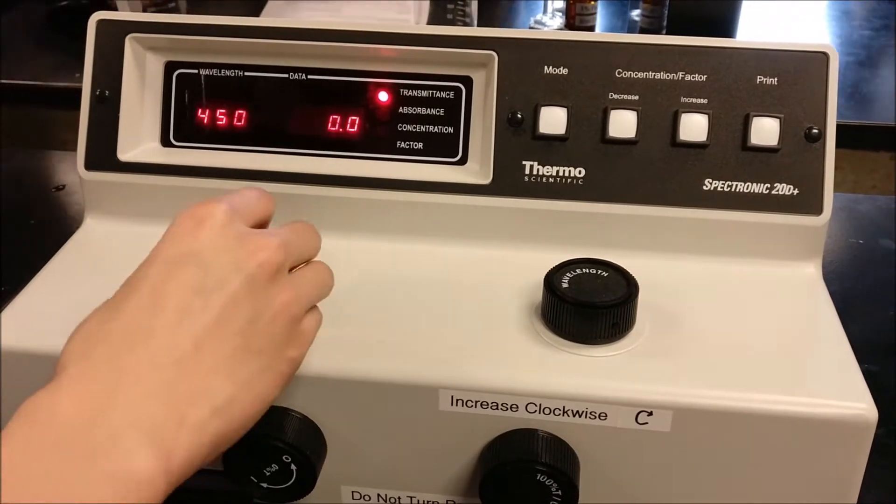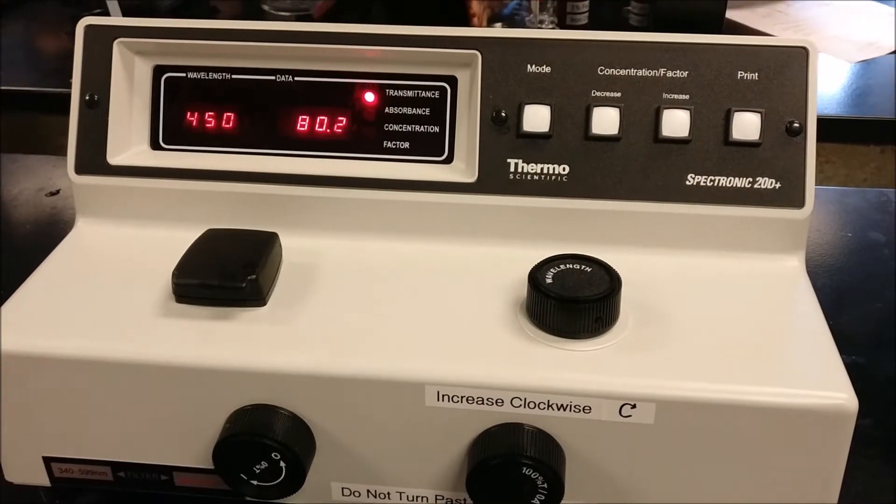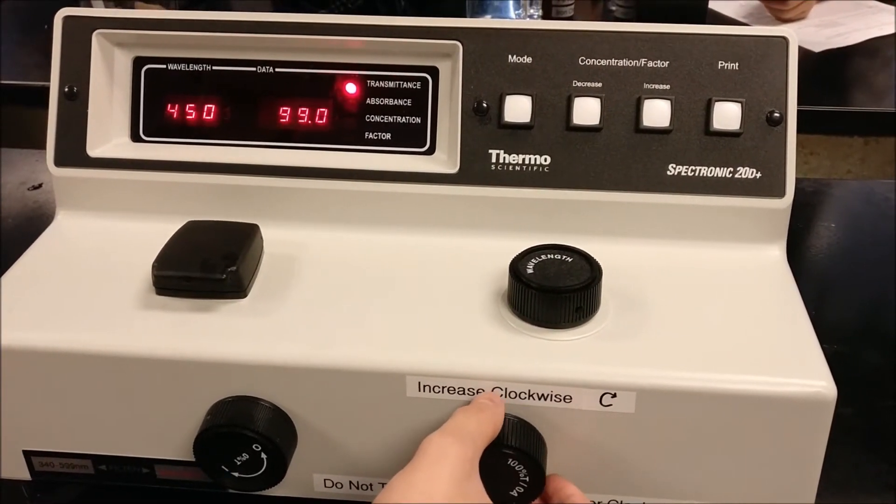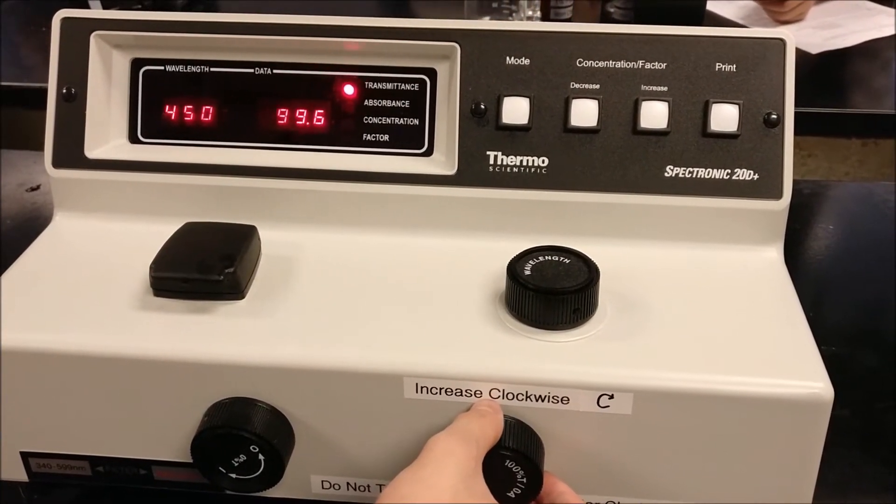Fill the test tube with water and put it into the sample holder. Make sure the white label on the test tube faces you when you put the test tube in. When the reading remains stable, adjust the transmittance to 100 by adjusting the 100% T knob on the bottom right.